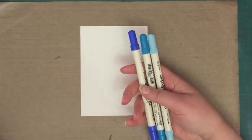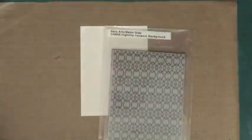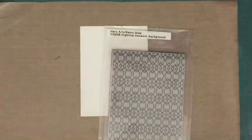So I'll be using distress markers in blueprint sketch, mermaid lagoon, and tumbled glass, and I'm going to be stamping and white embossing with this hero arts basic gray highline ironwork background.